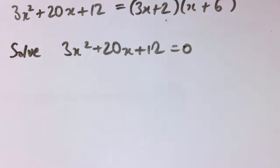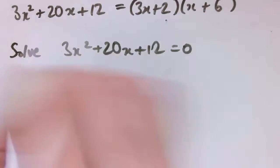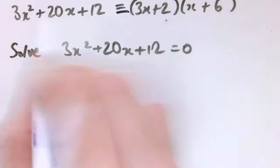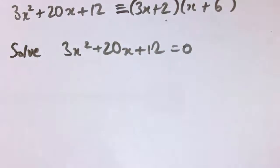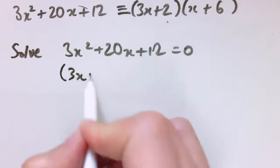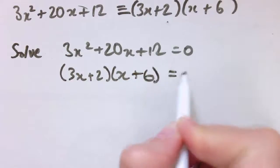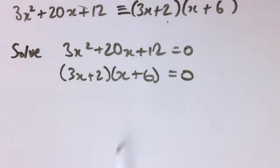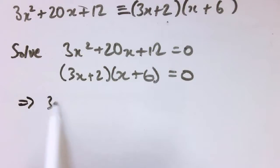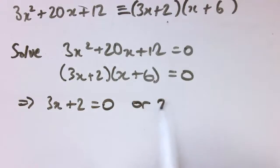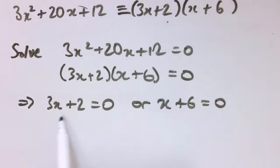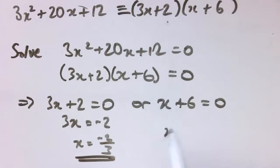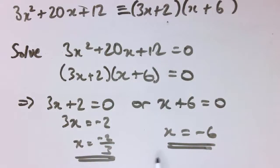If the question asks to solve the equation by factorising, since this is an identity true for all values of x, we can write 3x plus 2 times x plus 6 equals 0. Two things multiply to give 0, so one must be 0: either 3x plus 2 equals 0 or x plus 6 equals 0. The first gives 3x equals minus 2, so x equals minus two thirds; the second gives x equals minus 6. So the two roots are x equals minus two thirds or x equals minus 6.